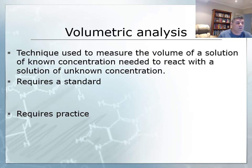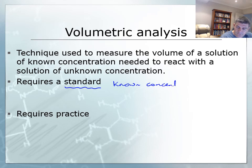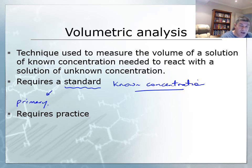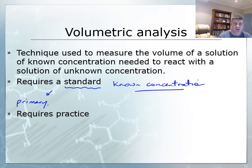In order to do that, the first thing we need is a standard — and we talked about standards in the year 11 course. A standard is a solution which has a known concentration. There are two ways to know a concentration. You can either use what we call a primary standard, which is a substance that has certain characteristics: a large molar mass, it's stable, it doesn't absorb moisture from the atmosphere, and it remains consistent and pure over time — so its concentration is not going to be constantly changing.